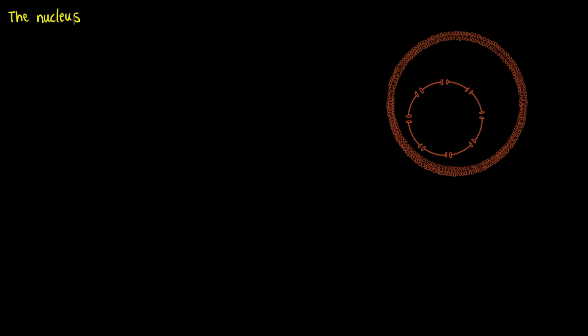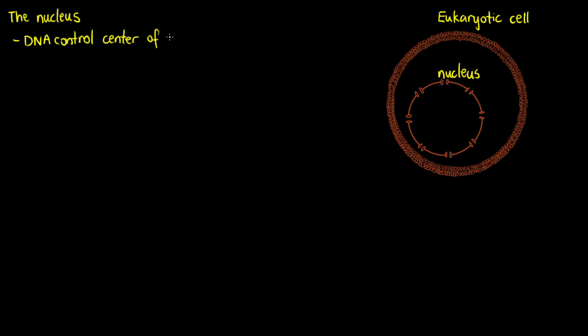Welcome to this tutorial where we will be discussing the nucleus, which we can think of as the brain of our cells. A nucleus is something we are only going to find within eukaryotic cells. We probably already know that it's where we house our DNA and chromosomes, so let's write down that it is the DNA control centre of our cell, and it contains our cell's genetic material.